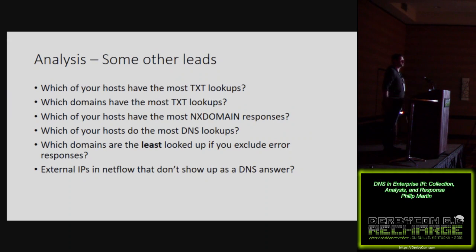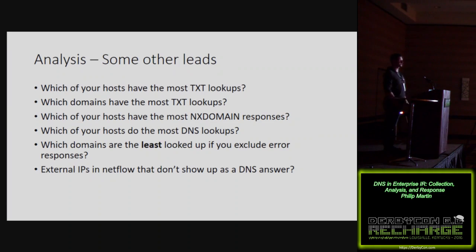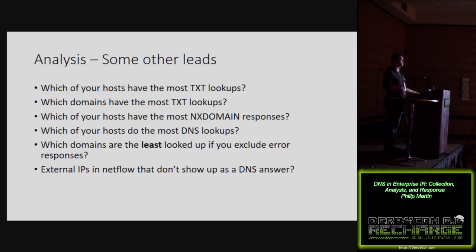Other useful analytical threads: pure volume — who's doing the most DNS lookups in my environment and why? The reverse — what domains are looked up least across the board, again for servers not clients. And lastly, what's showing up in NetFlow that's not showing up as a DNS answer? That requires Spark or equivalent, but surfaces malware that's avoiding DNS to evade this kind of analysis.